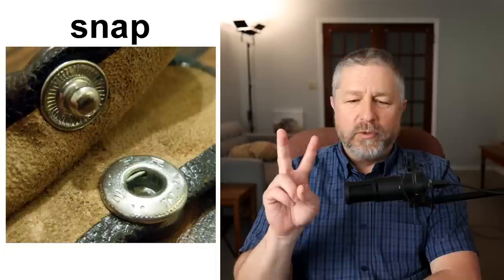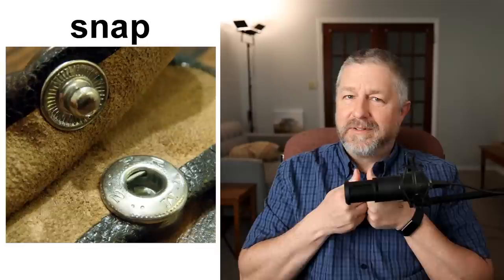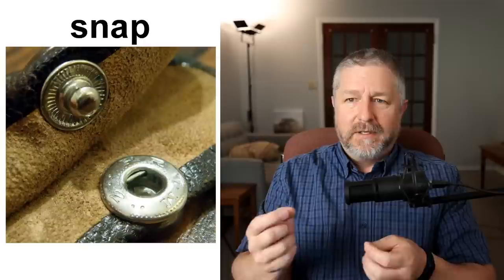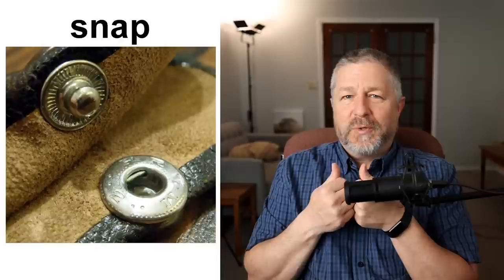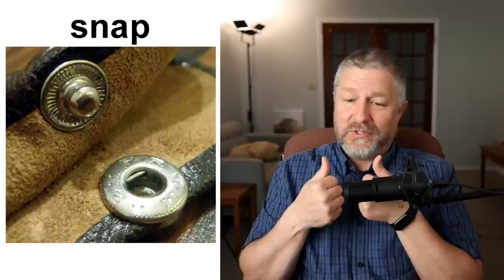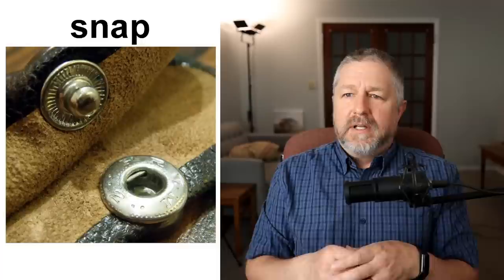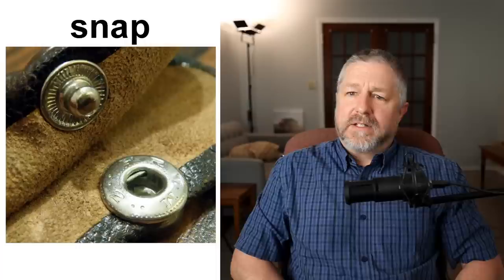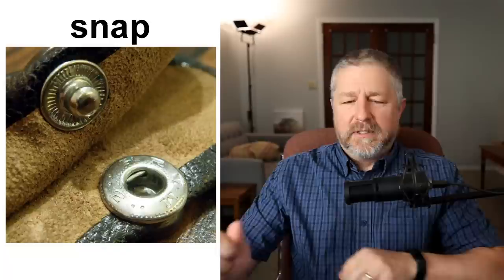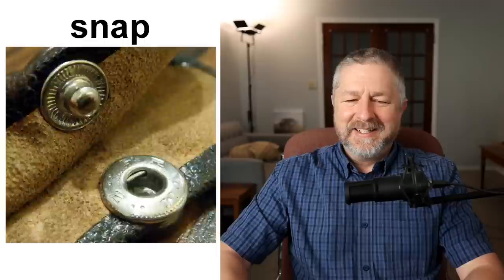Snap. A snap is like a button — it does the same job but works differently. There are two parts to a snap and when you push them together it goes snap. So we use the word to describe the sound, the thing, and the action — when you snap a snap together it makes a snap. Some pants might have a snap on the front instead of a button.